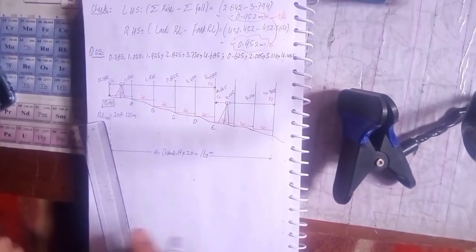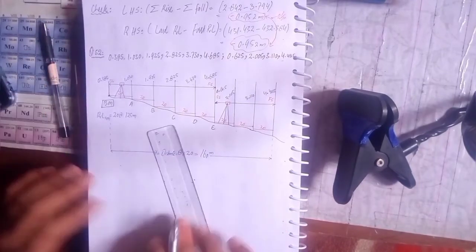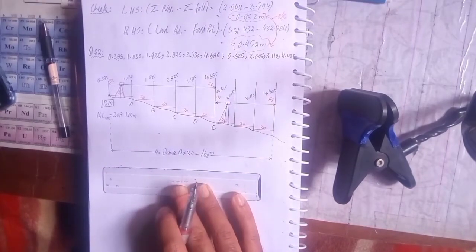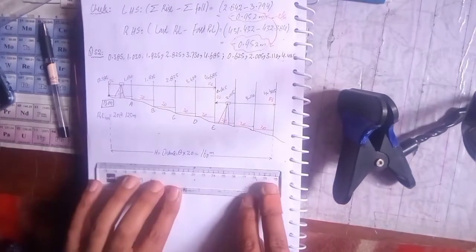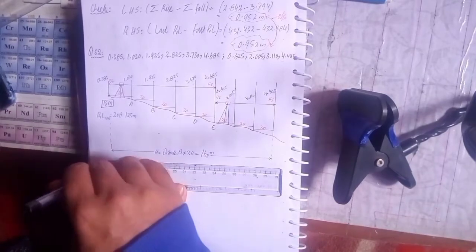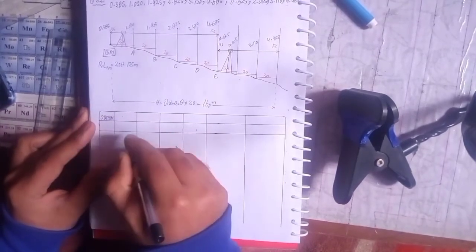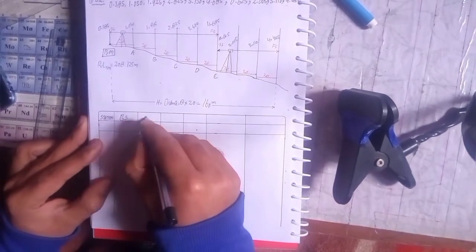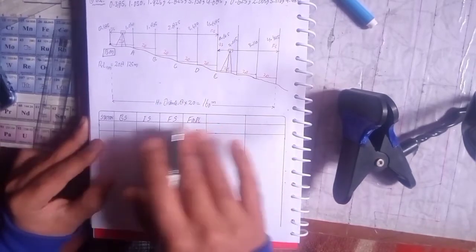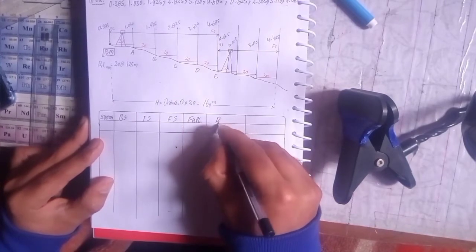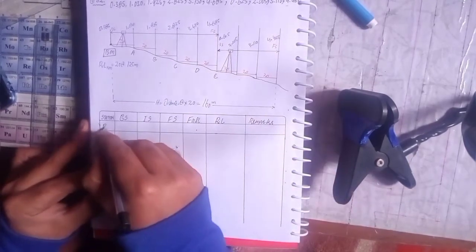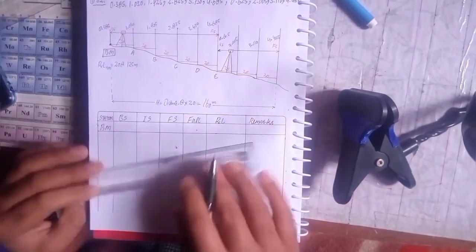Here is the instrument — the theodolite — by which we calculate the staff readings. Now we will be making the table for the readings to calculate the RL of the points. In the first column we mention the station, in the second the backside reading, in the third the intermediate sight reading, then foresight, then fall. As there is no rise, I didn't mention it, and then RL and the remarks.